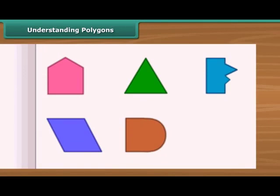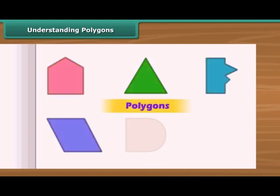These figures displayed on a screen are closed curves. Each of these curves have different shapes. First four curves are made up of straight lines and are called polygons. A figure is a polygon if it is a simple closed figure made up of line segments.